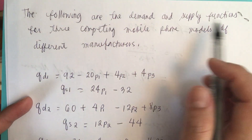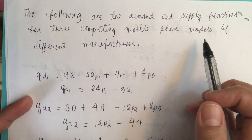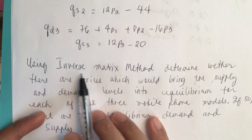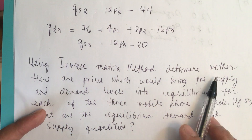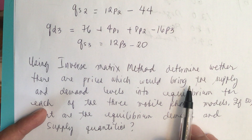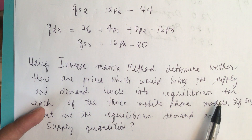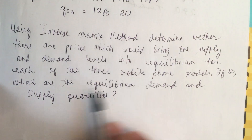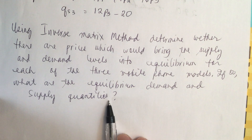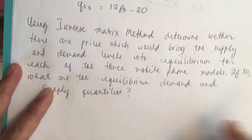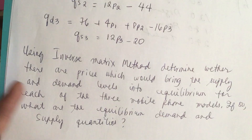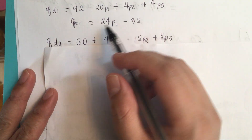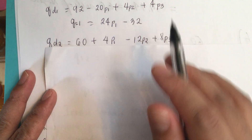The following are the demand and supply functions for three competing mobile phone models of different manufacturers. Using the inverse matrix method, determine whether there are prices which would bring the supply and demand levels into equilibrium for each of the three mobile phone models. If so, what are the equilibrium demand and supply quantities? Equilibrium occurs when demand and supply are equal.